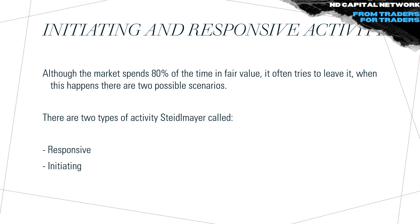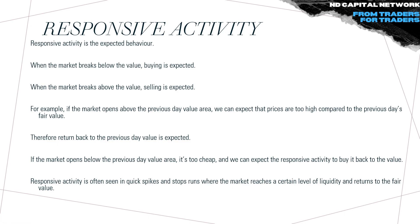Now let's talk about initiative and responsive activity. When the market spreads outside the fair value, it often tries to leave it, and when this happens there are two types of activity: responsive and initiating — as named by Steidlmayer. Responsive activity is the expected behavior: when the market breaks below value, buying is expected; when it breaks above value, selling is expected. For example, if the market opens above the previous day's value area, price is too high and a return to that value is expected. If it opens below, it's too cheap and responsive buying is expected. Responsive activity is often seen in quick spikes and stop runs where the market reaches a liquidity level and returns to fair value.